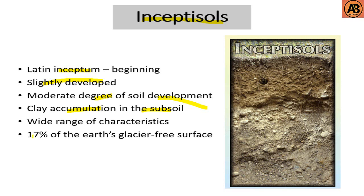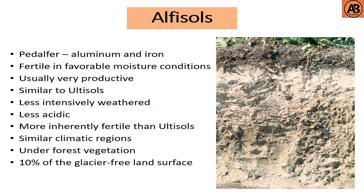Inceptisols occupy 17% of Earth's glacier-free land surface, making them the first in position by coverage. Here we can see the soil types — Inceptisols — then Alfisols.